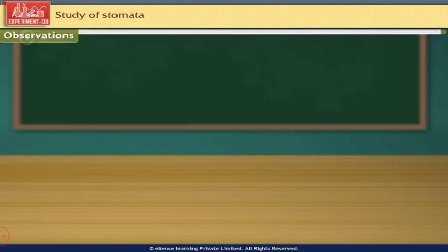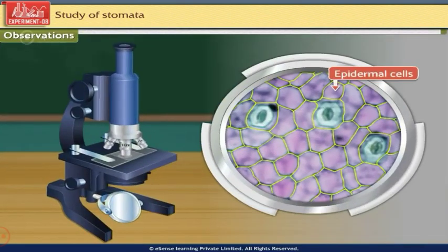Observations: The epidermal cells are visible. These are irregular shaped cells and have no intercellular spaces.